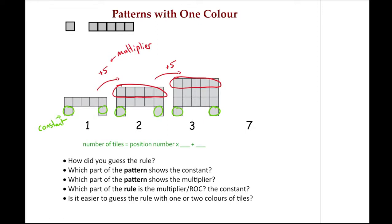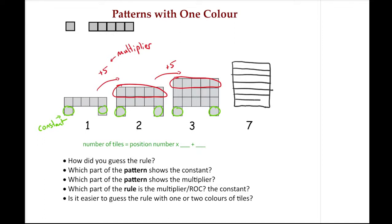So if I think about the connection between the position number and the multiplier: for whatever my position number is, I'm going to multiply that by five because that tells me how many rows of five I have. So if I imagine position seven, I'm going to have one, two, three, four, five, six, and seven rows of five, and I'm still going to have my two little legs on the bottom.